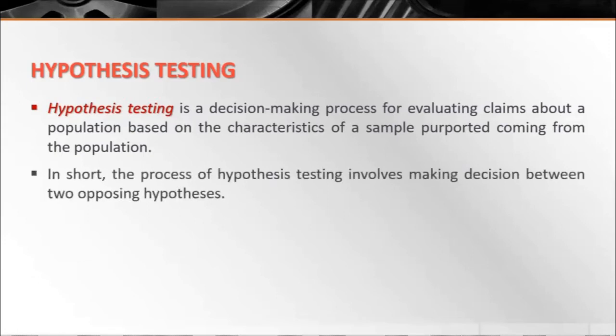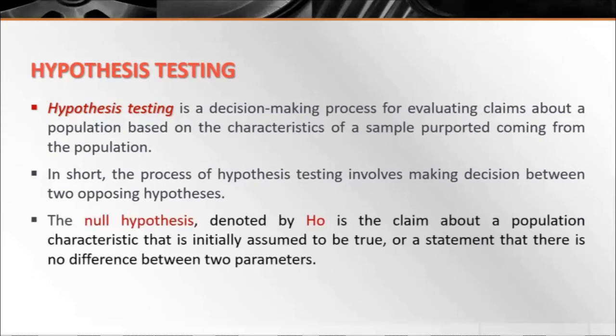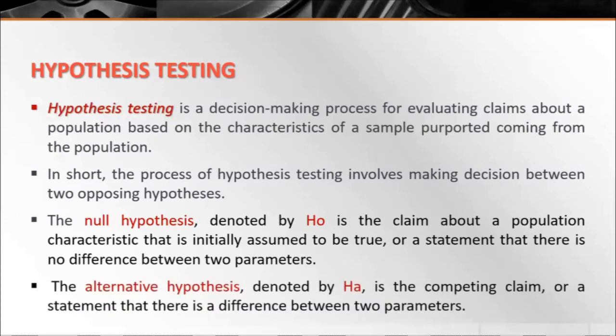The null hypothesis, denoted by H₀, is the claim about a population characteristic that is initially assumed to be true, or a statement that there is no difference between two parameters. While the alternative hypothesis, denoted by Hₐ, is the competing claim or statement that there is a difference between two parameters.